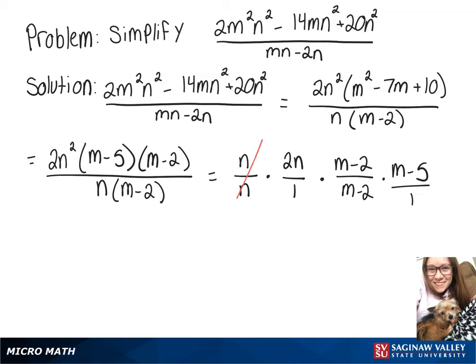Now this n over n and m - 2 over m - 2 will cancel out because they're equal to 1, which leaves us with 2n times m - 5.